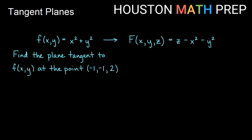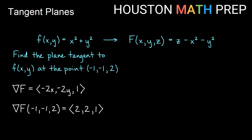Now let's walk through the process. I have my circular paraboloid z equals x squared plus y squared. I move everything to one side and think of this as a level surface: z minus x squared minus y squared equals zero. I want to find the plane tangent at the point negative 1, negative 1, negative 2. Thinking of lowercase f as capital F, we take del of capital F. The partial derivative with respect to x gives negative 2x, with respect to y gives negative 2y, and with respect to z gives 1. So del capital F equals negative 2x, negative 2y, 1. Evaluating at the point negative 1, negative 1, negative 2 gives us the normal vector 2, 2, 1.